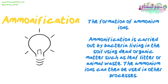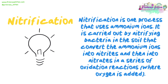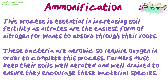Ammonification is the formation of ammonium ions. It is carried out by bacteria living in the soil using dead organic matter such as leaf litter or animal waste. The ammonium ions can then be used in other processes. Nitrification is one process that uses ammonium ions. It is carried out by nitrifying bacteria in the soil that convert the ammonium ions into nitrites and then into nitrates in a series of oxidation reactions where oxygen is added. This process is essential in increasing soil fertility as nitrates are the easiest form of nitrogen for plants to absorb through their roots. These bacteria are aerobic so require oxygen in order to complete this process.